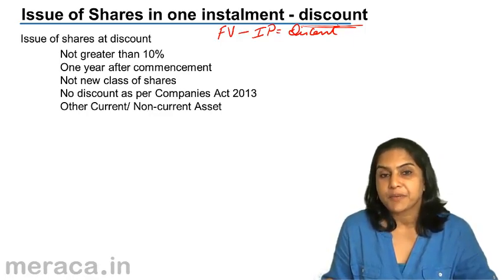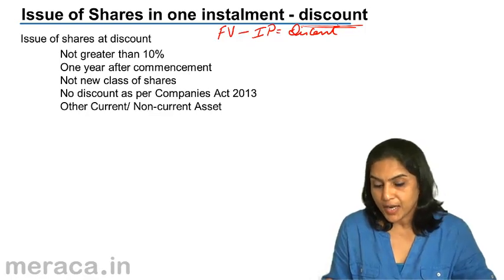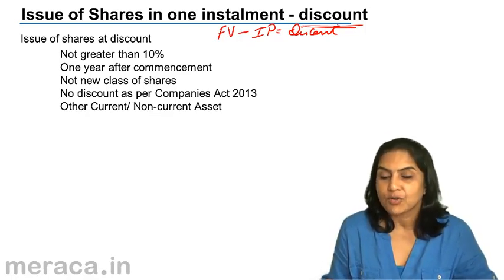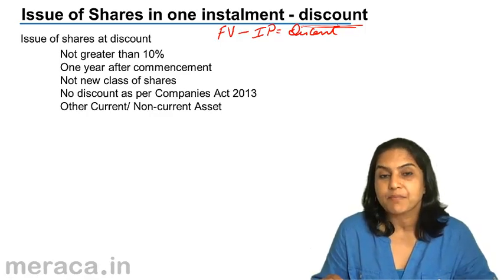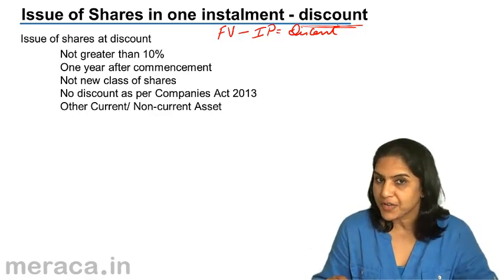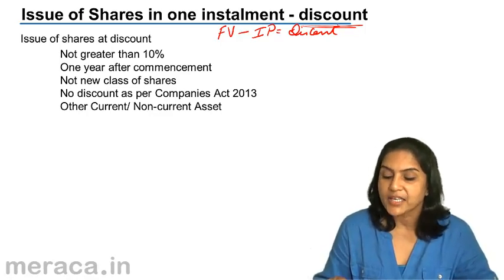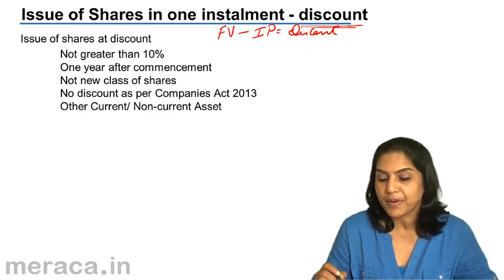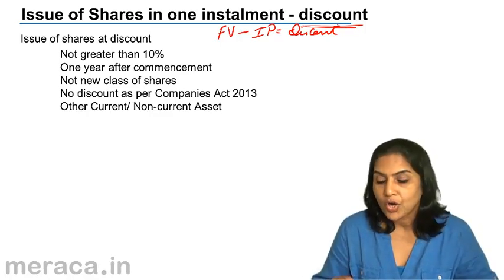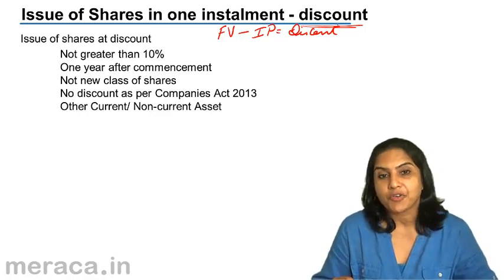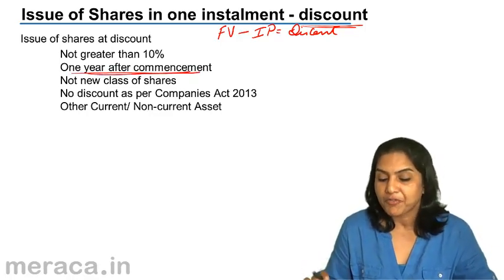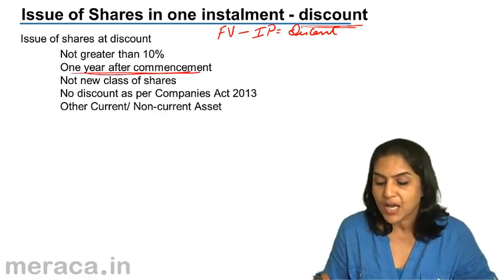Earlier, as per the Companies Act 1956, the discount could not exceed 10% of the face value of the shares. Shares could be issued by a company at a discount only after one year of operations, and it should not be for any new class of shares.